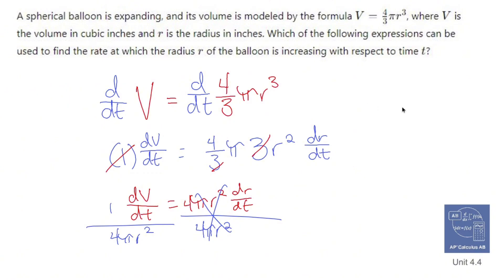And I'm going to rewrite it like this. Let me get a different color. dr dt is going to equal one over four pi r squared dV dt. And that's the formula that we can use for dr dt. Fun stuff. Related rates.